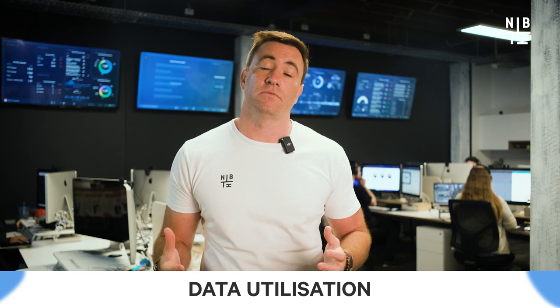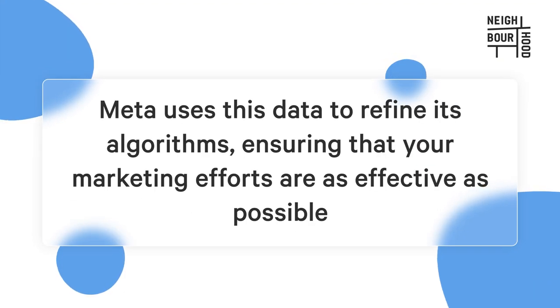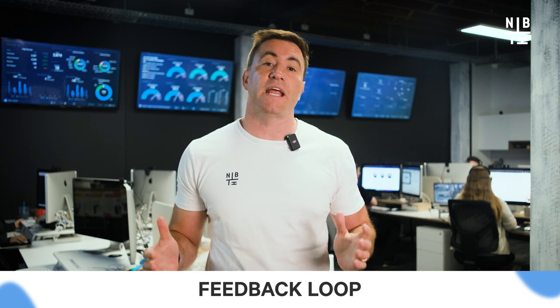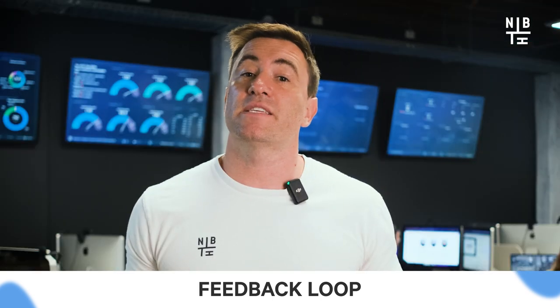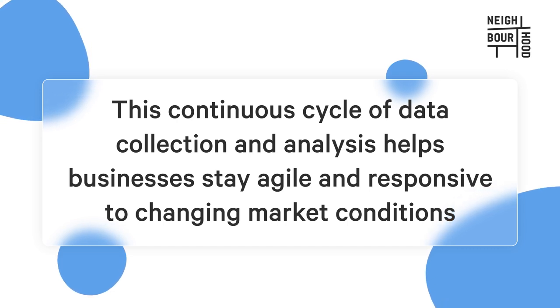Once received by Meta, the data is used to enhance ad targeting and optimization. This means that your ads can be more precisely targeted to the right audiences, improving the likelihood of conversions. Meta uses this data to refine its algorithms, ensuring your marketing efforts are as effective as possible. The data sent through the Conversions API can also be used to create a feedback loop, where insights gained from customer interactions are used to refine and improve future marketing strategies. This continuous cycle of data collection and analysis helps businesses stay agile and responsive to changing market conditions.